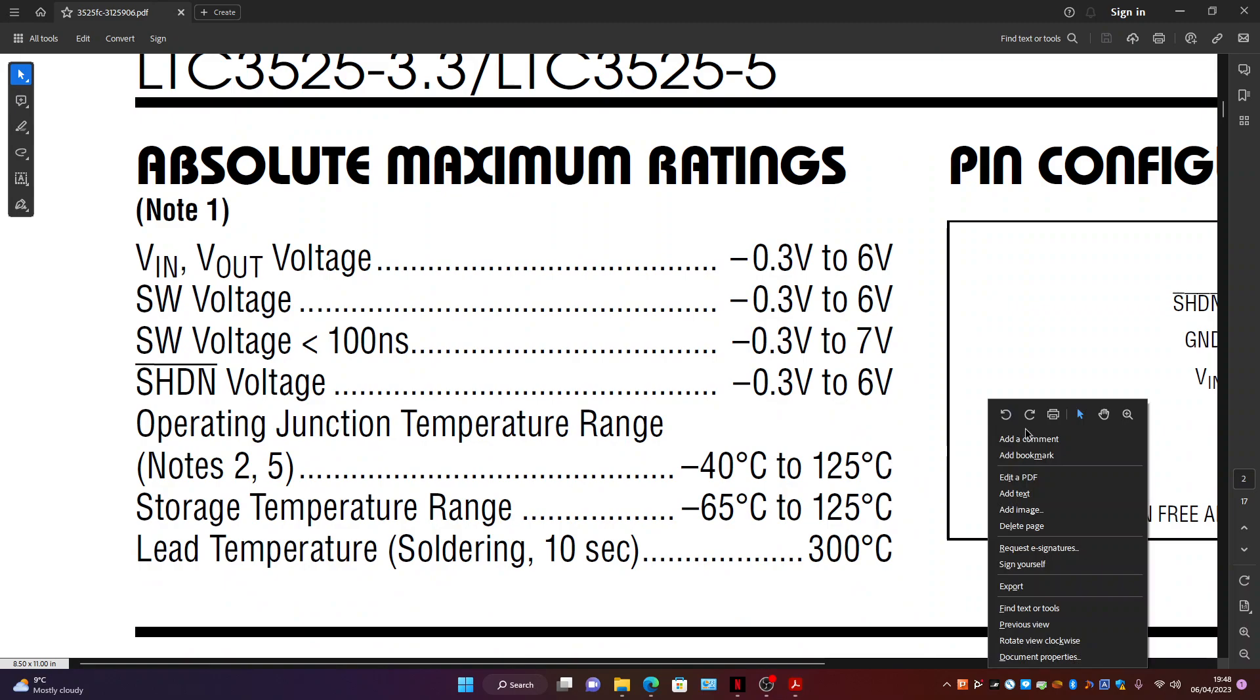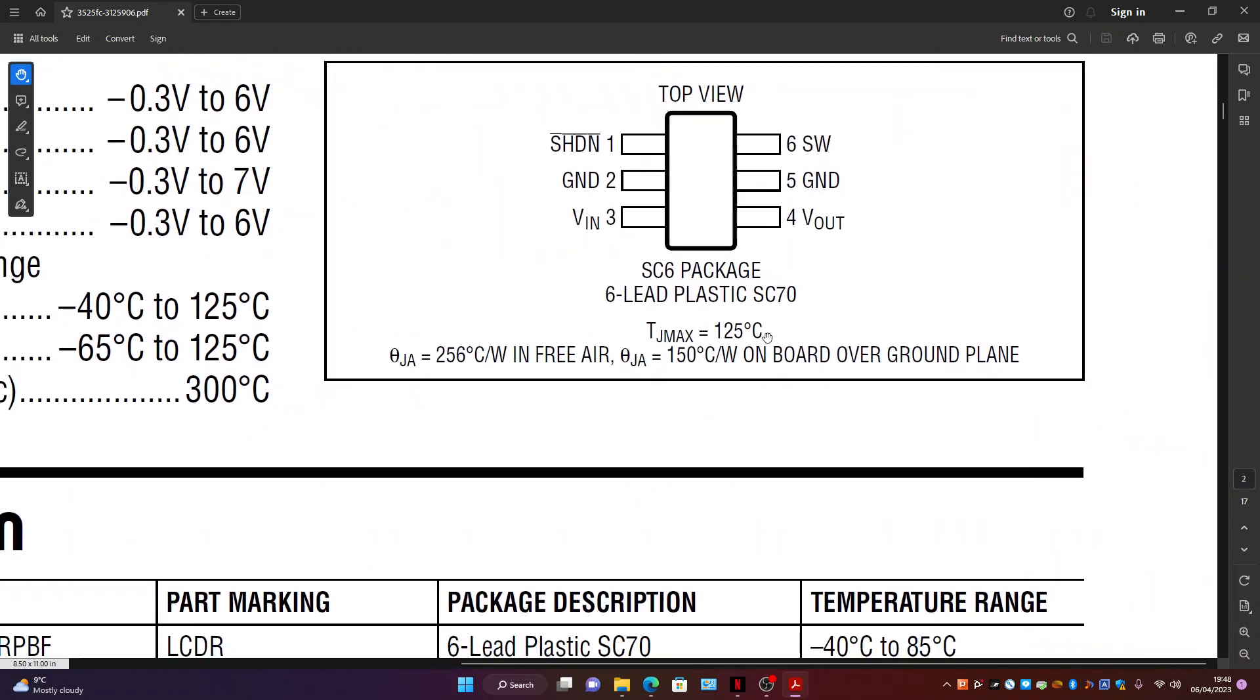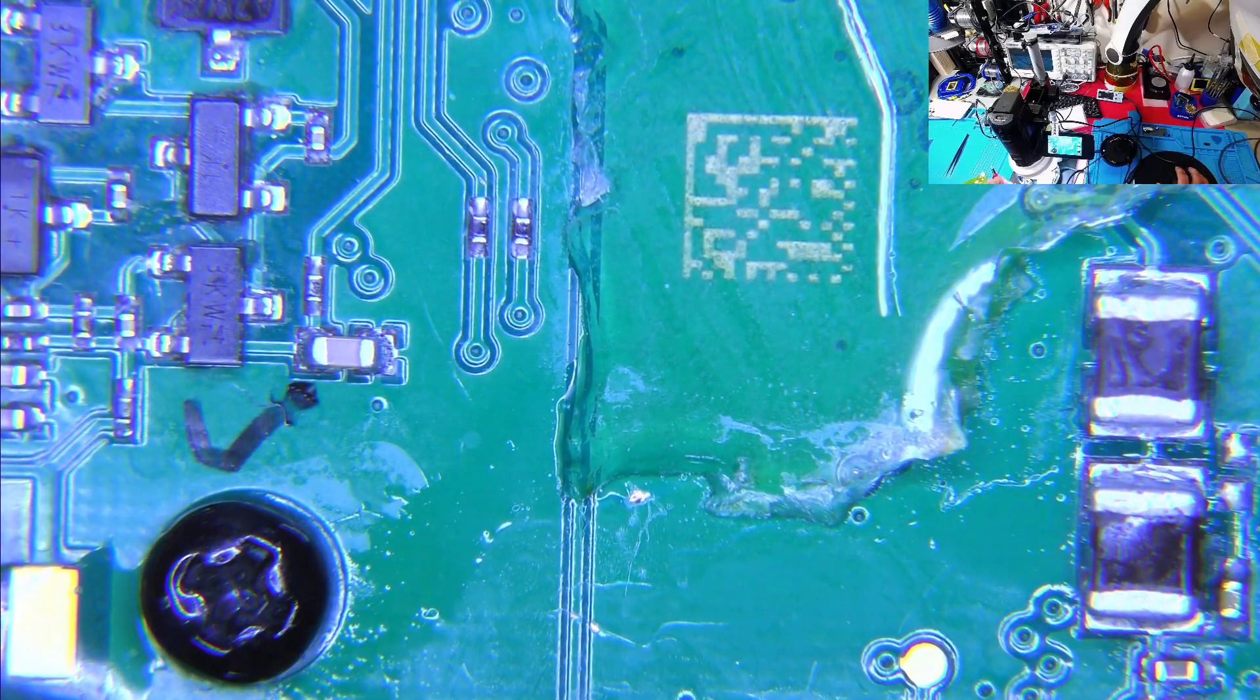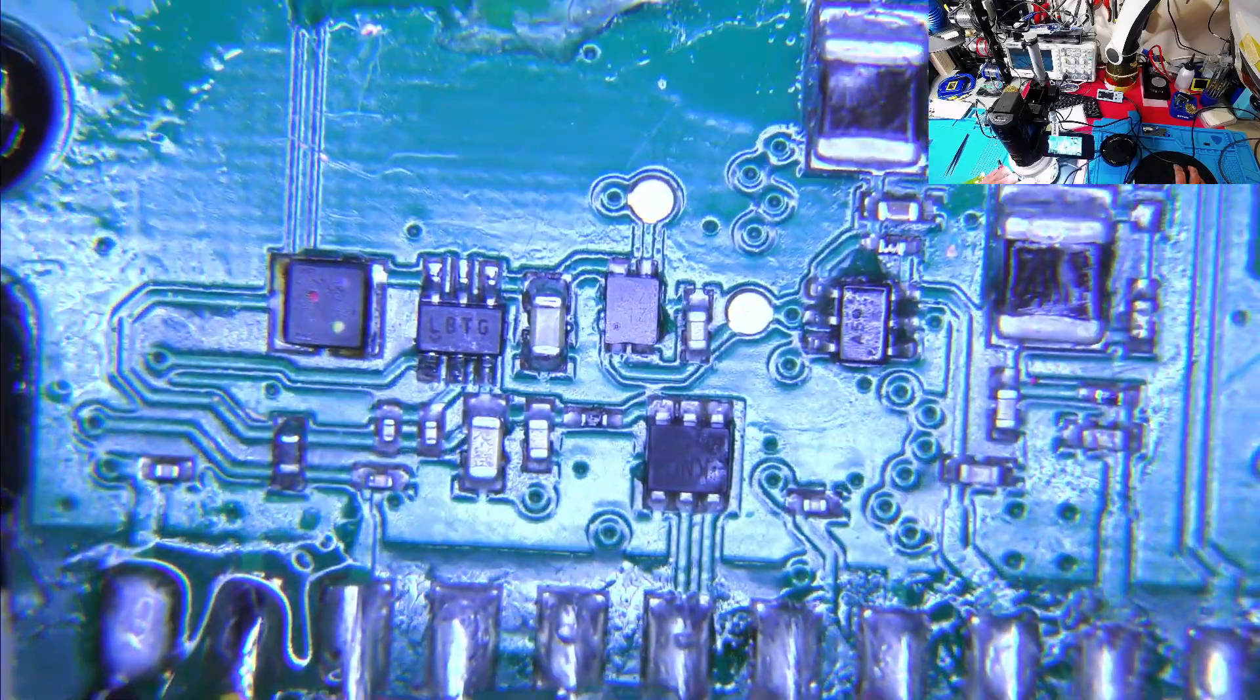This is the package. So, because there's no dot here and dot here, the centre part is ground, obviously, but this is Vin, Vout. And there's no way of me testing the voltage because I haven't got anything else to plug this into to test it. So my guess is that the Vout was shorted to ground. So let's go under the microscope and let's see.